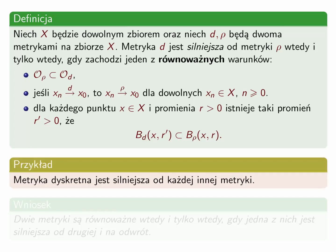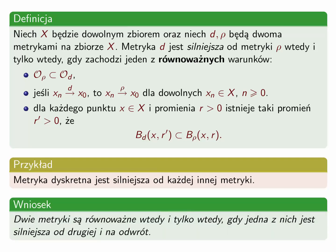Jako przykład niech posłuży metryka dyskretna — jest ona silniejsza od każdej innej metryki zdefiniowanej na tym samym zbiorze. Wynika to z faktu, że topologia generowana przez metrykę dyskretną to rodzina wszystkich podzbiorów przestrzeni. Na koniec wykładu prosty wniosek: dwie metryki są równoważne wtedy i tylko wtedy, gdy jedna z nich jest silniejsza od drugiej i na odwrót.